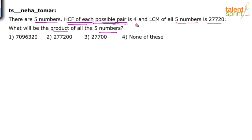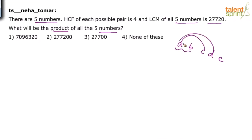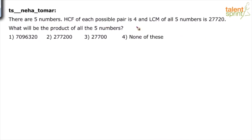When there are five numbers, there are many pairs you can form. For example, if the numbers are A, B, C, D, E — then A-B, A-C, A-D, A-E, B-C, B-D, B-E, C-D, C-E, and D-E are all possible pairs. He says the HCF of each of these pairs is 4. And LCM of all five numbers A, B, C, D, E is 27,720.